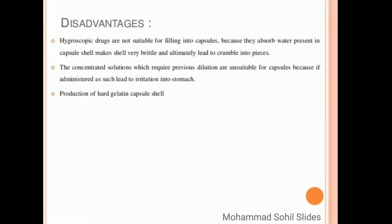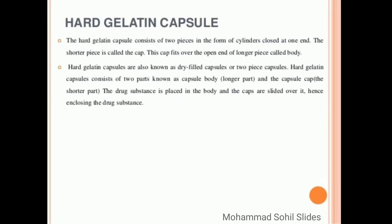Production of hard gelatin capsule shell. Now coming to our actual topic, that is hard gelatin capsule. The hard gelatin capsule consists of two pieces in the form of cylinders closed at one end. The shorter piece is called the cap. This cap fits over the open end of the longer piece called body.